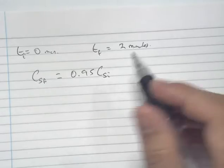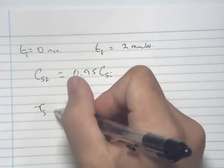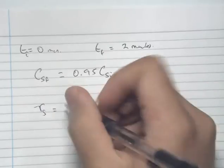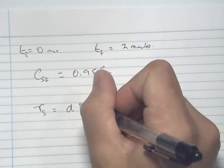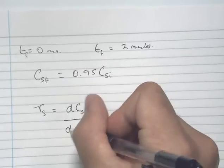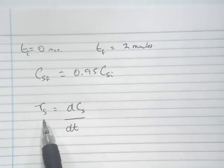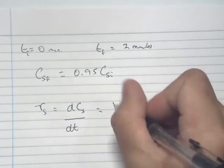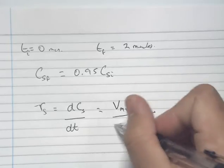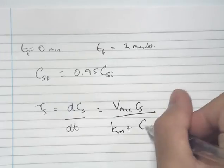We go to our rate equation: minus RS is related to the differential of concentration over time, dCS/dt. We also know that the rate of reaction RS is equal to Vmax times the substrate concentration CS, divided by the Michaelis-Menten constant Km plus the substrate concentration CS.